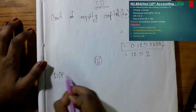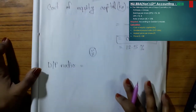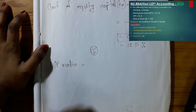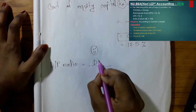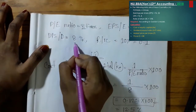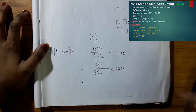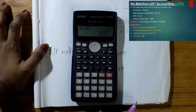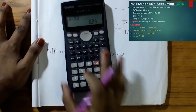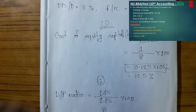Calculation number 2 is the dividend payout ratio (DP ratio). The DP ratio is equal to DPS divided by EPS, multiplied by 100. DPS is 8 and EPS is 32, so 8 divided by 32 gives us 0.25, which is 25%. So the DP ratio is 25%. Now we move to calculation number 3.